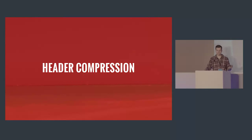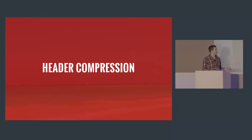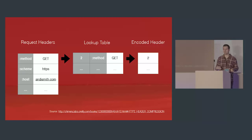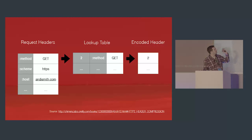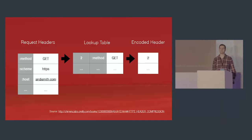We've also got better header compression. Every time we have a resource, we send things like user agents and caching information. With HTTP/2, we compress that using HPACK, which reduces our transfer size. HPACK also keeps an index of our previous headers — so rather than sending the same header information again and again, we keep it in a lookup table and just send the index. This can significantly reduce the number of bytes transferred.